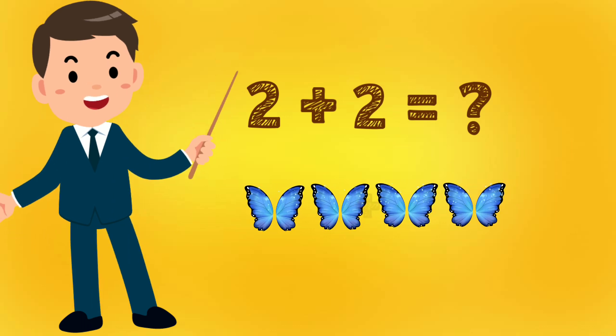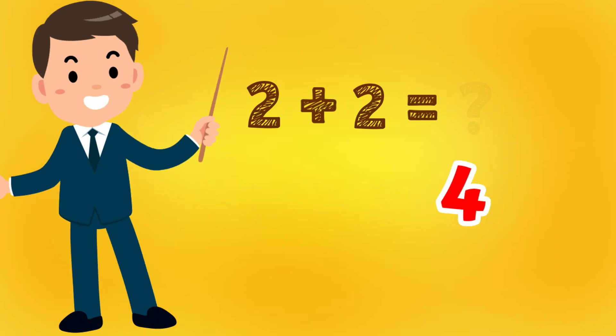Now let's take another example. Two plus two equals how much? Two butterflies plus two butterflies. Now combine them and count: one, two, three, four. And the answer is four.